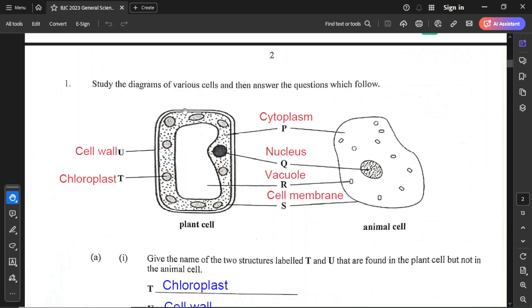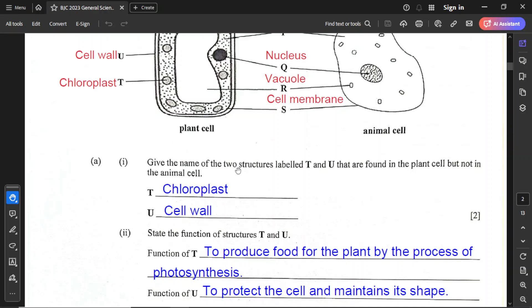Question number one reads, study the diagrams of various cells and then answer the questions which follow. Now we have labellings for all of these parts. For the plant cell, we have the cell wall which is U, T is the chloroplast, P is the cytoplasm for both cells. We have the nucleus, we have the vacuole, and we have cell membrane. Now for part A, give the name of two structures labeled T and U that are found in the plant cell but not in the animal cell. So T is the chloroplast and U is the cell wall.